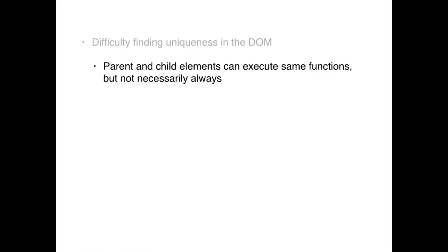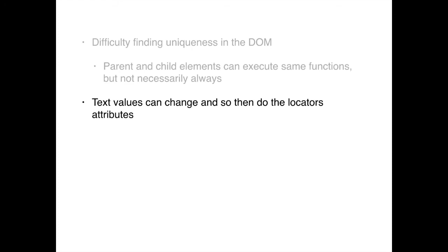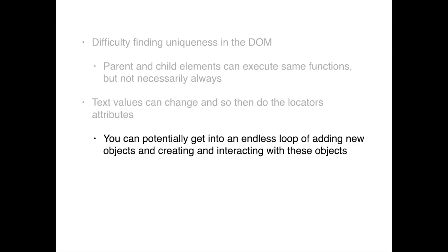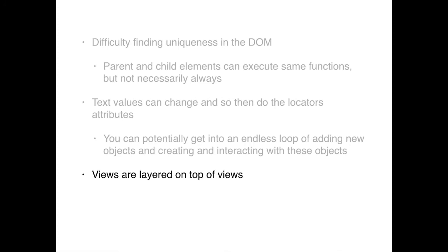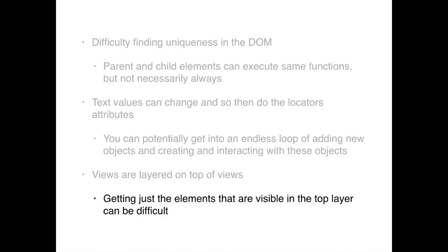Another difficulty is finding uniqueness in the DOM while crawling. You get parent and child elements that can execute the exact same functionality but not always, so you don't always want to exclude those. Text values of an element can change and so can locator attributes. You can also get into an endless loop of interacting with a new object, modifying it, creating another new object — a cycle you have to add logic to prevent. Getting only the elements visible on the top layer — what a human would see — is sometimes difficult and is an algorithm I'm constantly tweaking.